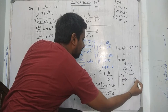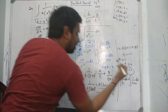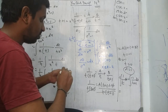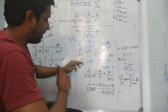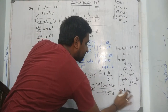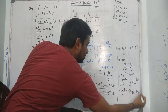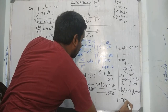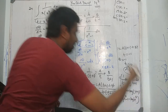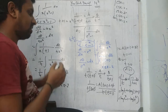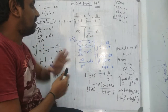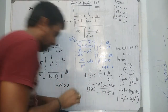Therefore integrate: 1 over t dt minus 1 over (t + 1) dt. This gives log t minus log(t + 1) plus C. Substituting back t equals eˣ minus 1, we get log(eˣ minus 1) minus log(eˣ) equals log((eˣ minus 1)/eˣ) plus C. One more method is multiply and divide by e^(minus x) — that's the easiest way.